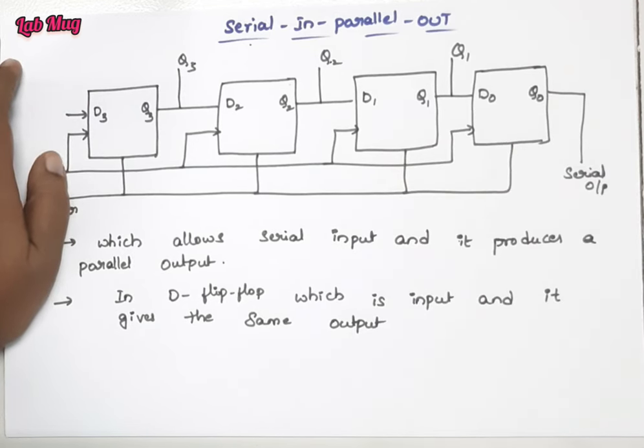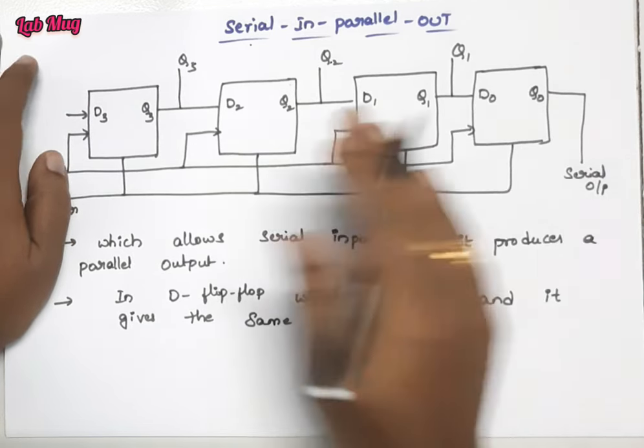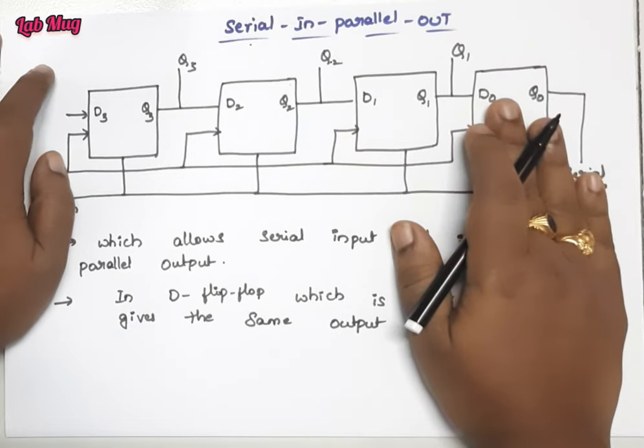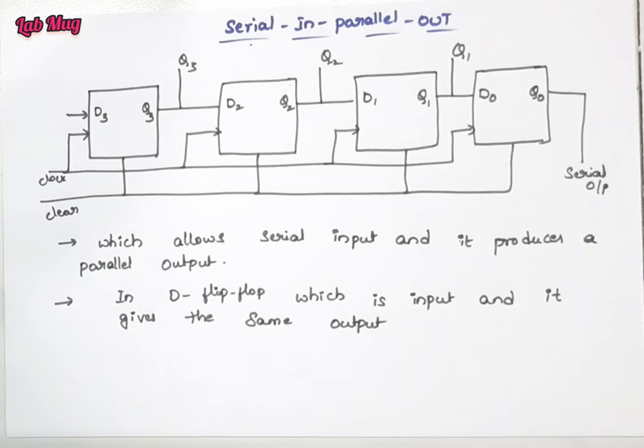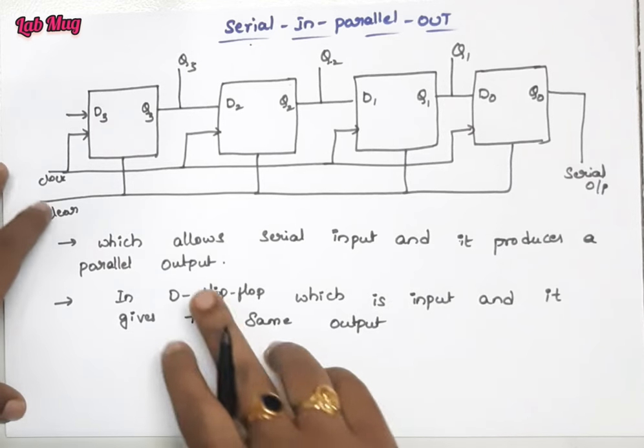Again D1 processing, Q1 is outgoing as output and passing as input to D0. So we pass serial input and get parallel outputs in this serial in parallel out shift register.